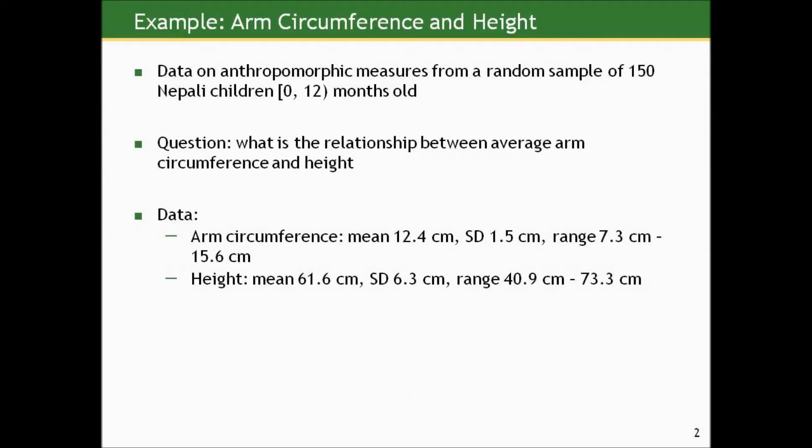Suppose we've got data on anthropomorphic measures from a random sample of 150 Nepali children between zero — essentially at birth — and 12 months old, so children less than a year old. This is based on a real data set from a vitamin A trial. We wanted to ascertain the relationship between arm circumference and height in these children — to see in the first year how arm circumference tracks with height.